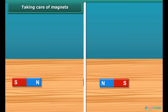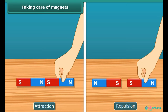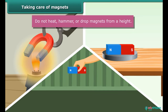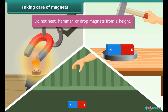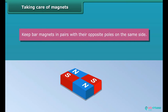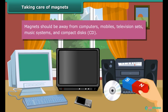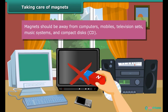Taking care of magnets. To keep magnets safe and in working condition, follow these guidelines: do not heat, hammer, or drop magnets from a height — they will lose their property if done so. Keep bar magnets in pairs with their opposite poles on the same side, and use wood to separate them. Keep a piece of iron across the poles of a horseshoe magnet. Magnets should be kept away from computers, mobiles, television sets, music systems, and compact discs.